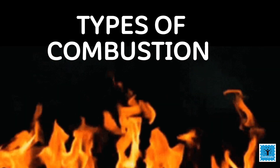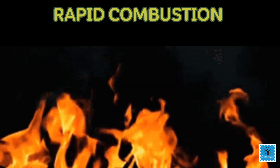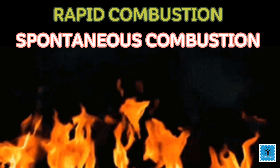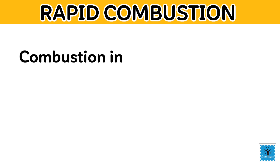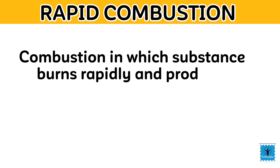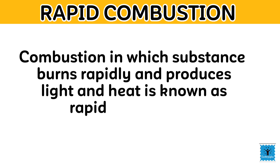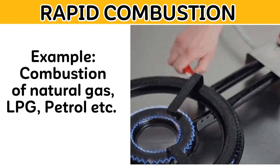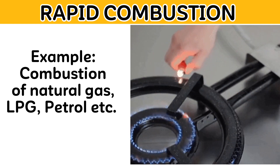Combustion can be divided into three types: rapid combustion, spontaneous combustion, and explosion. Combustion in which a substance burns rapidly and produces light and heat is known as rapid combustion. For example, combustion of natural gas, LPG, petrol, etc. This is usually attained by introducing external heat.